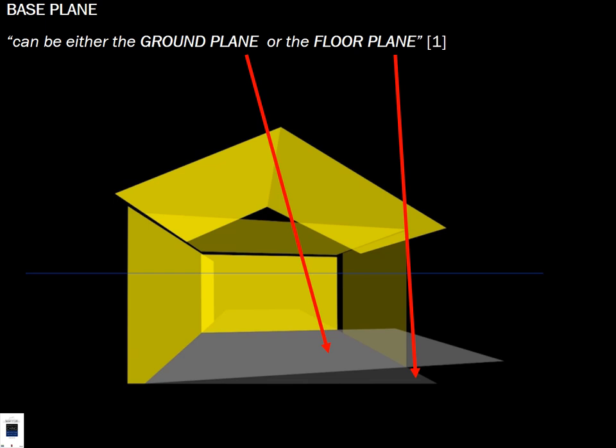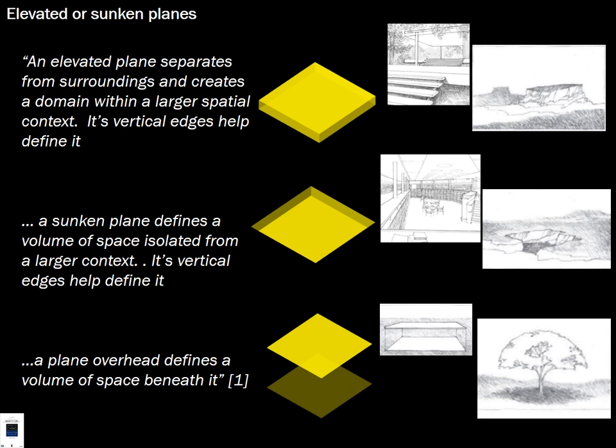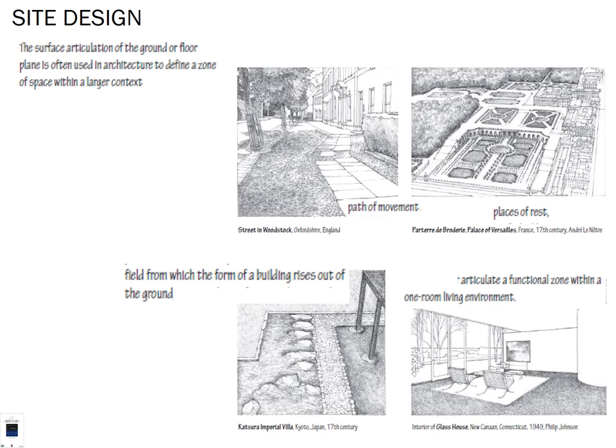The basic elements of form begin with the ground plane and the floor plane — not always the same thing. The elevation and terrain of a site and how it's graded differs from the floor plane of the structure. Elevated planes separate from surroundings and create a domain of larger spatial context, while sunken planes define a volume of space isolated from a larger context. The overhead plane defines a volume of space beneath, like a tree canopy.